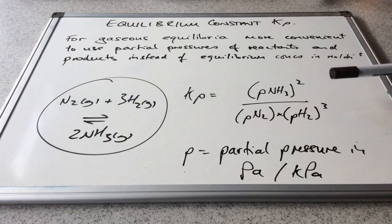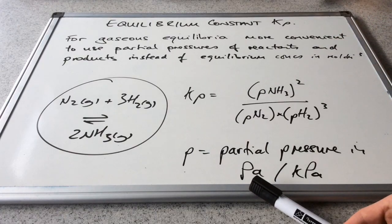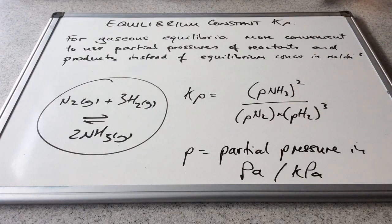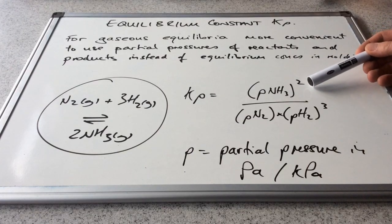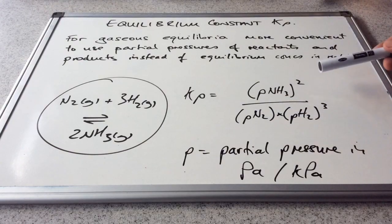That's what we've got here: ammonia is the product and nitrogen and hydrogen are the reactants, but instead of equilibrium concentrations we've got partial pressures. The partial pressure can be measured in Pascals or kilopascals, and we use round brackets rather than square brackets. If Kp is greater than 1 we're going to have more products than reactants at equilibrium, whereas if Kp is less than 1 we've got more reactants than products.